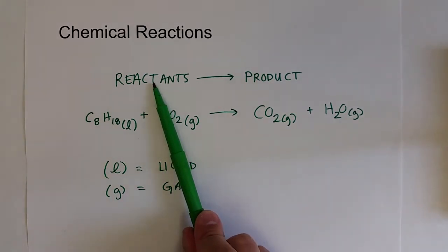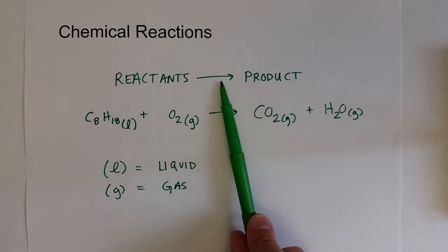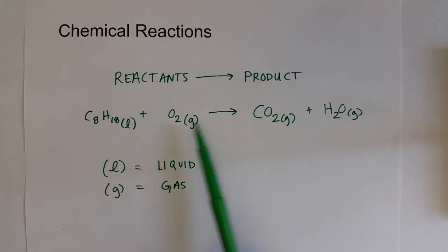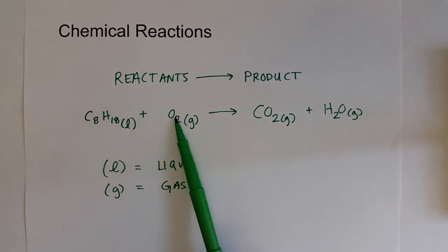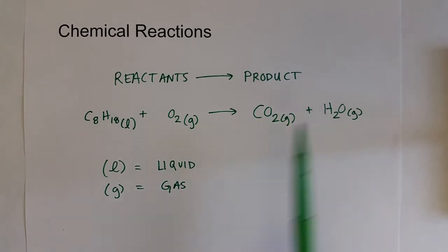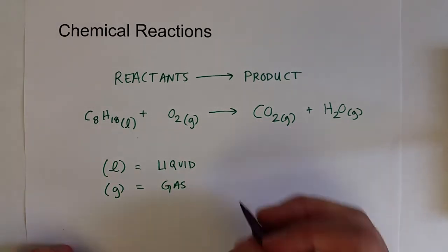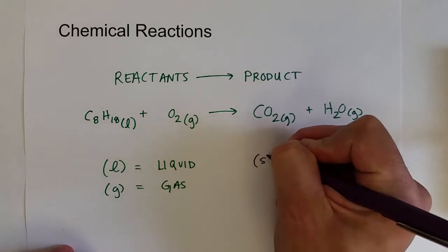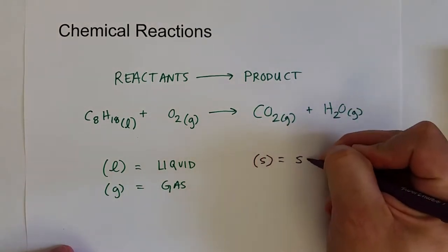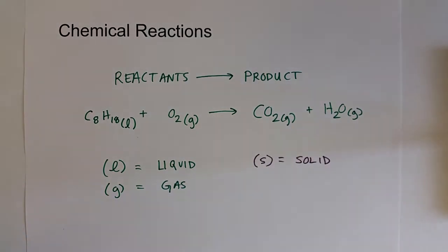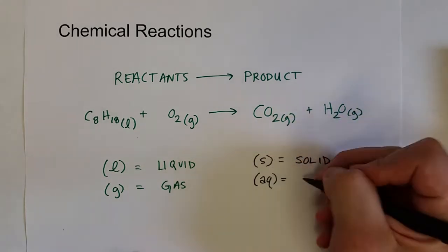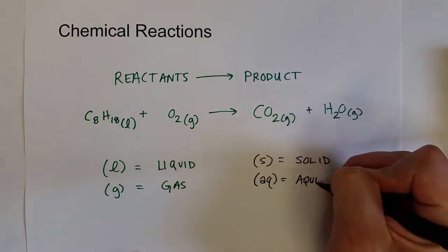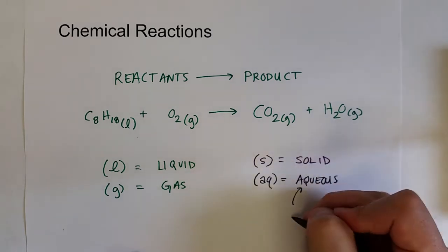We have reactants on the left side, we show an arrow to indicate a change, and then we show the products. If there's more than one reactant or more than one product, we separate those with the plus sign. Additionally, reactants or products can be in the solid phase, written as (s) in parentheses. Very important in biological chemistry and lots of other chemistry, we can also have things in the aqueous phase — (aq) in parentheses — which means dissolved in water.